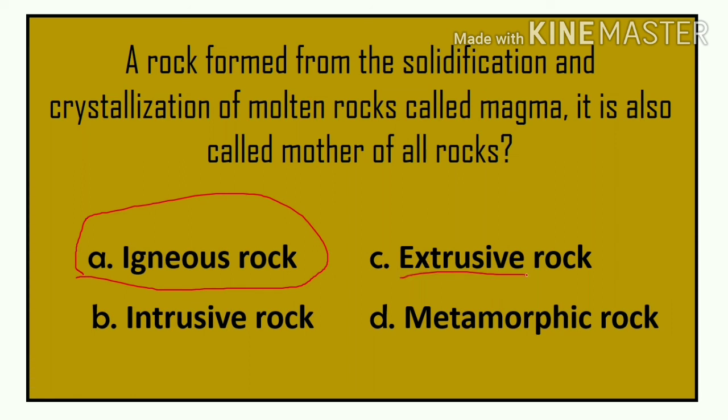To recap: the cooling and solidification of rock outside the volcano is called extrusive rock. When magma cannot come out and cools below the earth's surface, it is called intrusive rock. Metamorphic rocks will be covered in the next video.